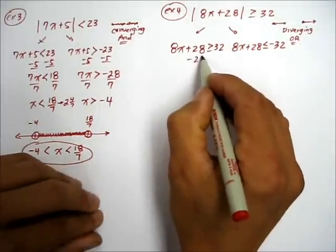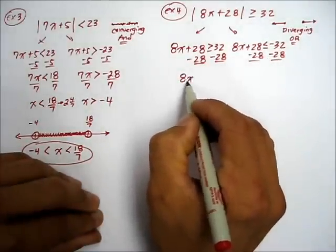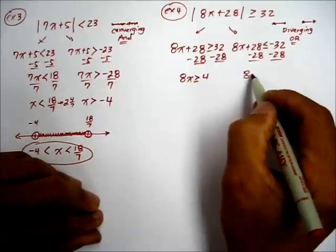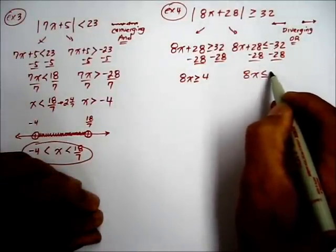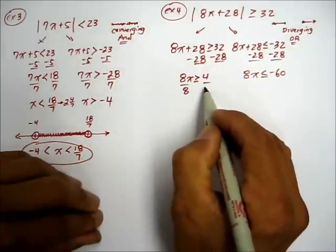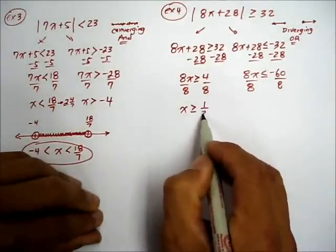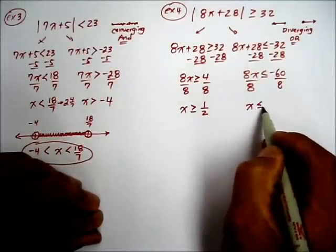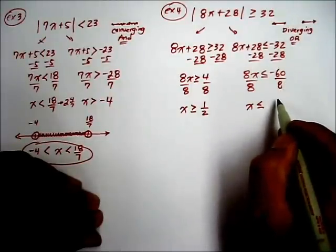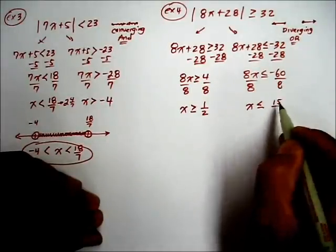Let's solve this simultaneously by subtracting 28 from both sides. So we have 8x ≥ 4 — since 32 - 28 = 4. Here, 8x ≤ -60 — they're both negative so it becomes a bigger negative. Dividing the coefficient 8 from both sides: x ≥ 1/2. And for the other side, 8 does not go into 60 perfectly — their common factor is 4, so 4 goes into 60 fifteen times and 4 goes into 8 twice, giving -15/2.